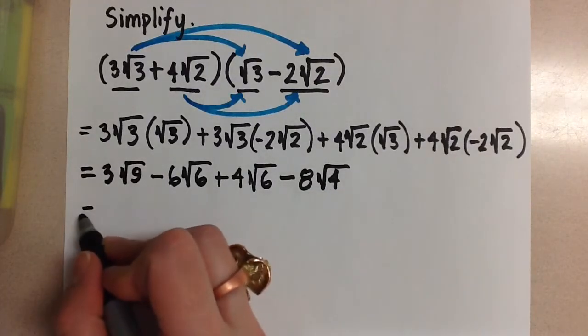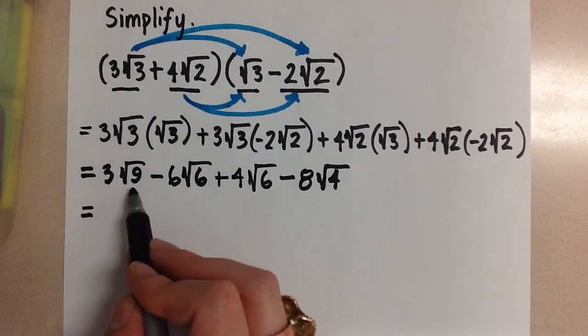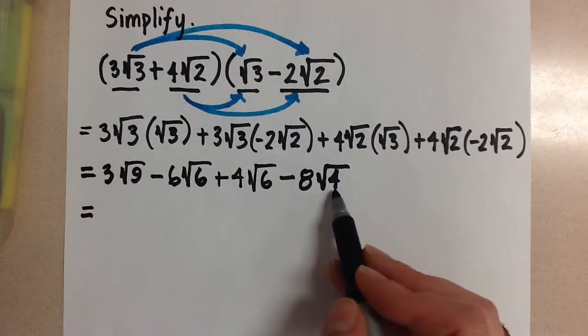So when we do this we can see in our first term that we have a perfect square with the 9 so we can take the square root of that. And we also have a perfect square with the 4 so we are going to take the square root there.